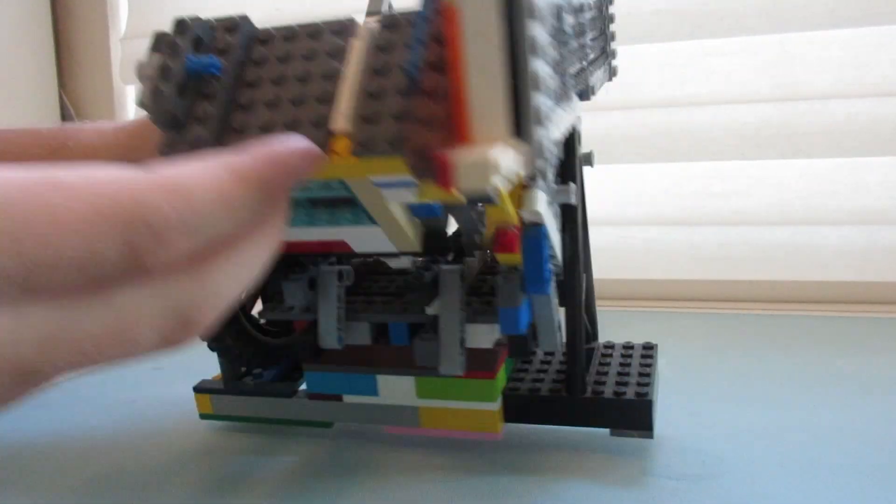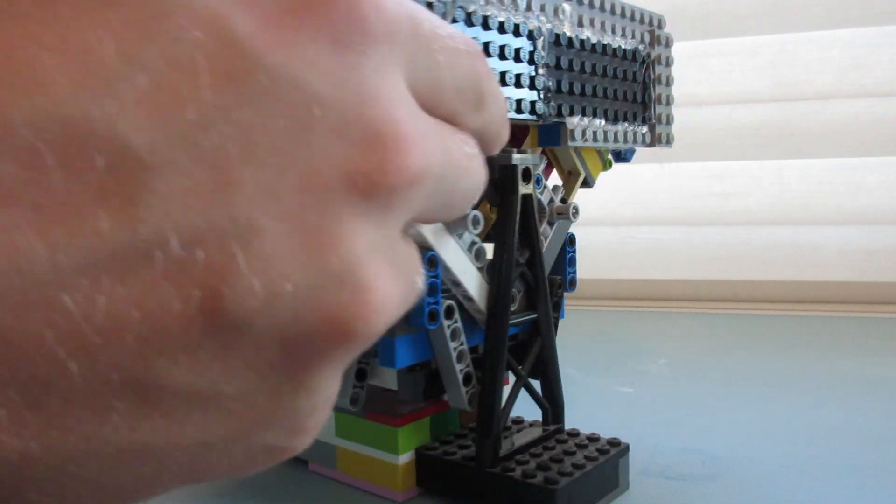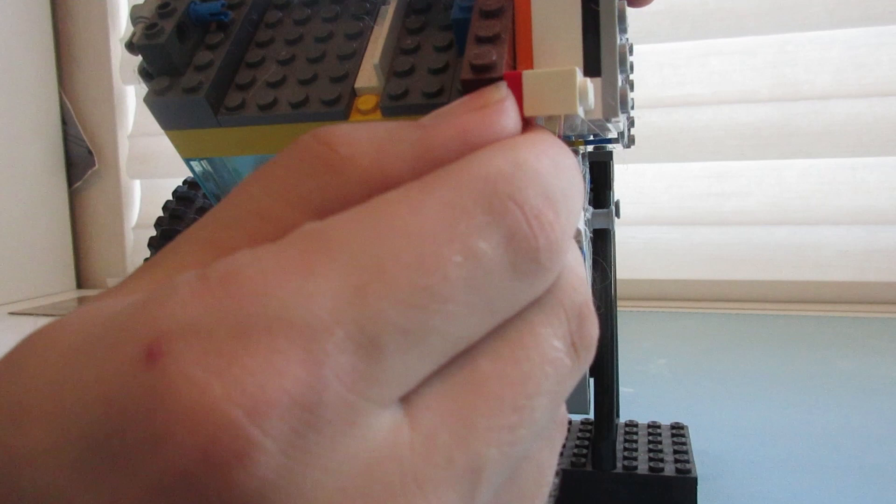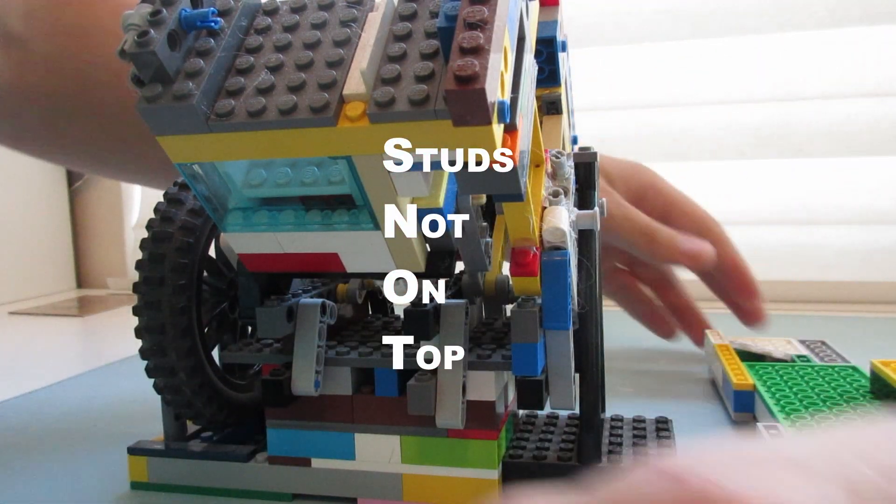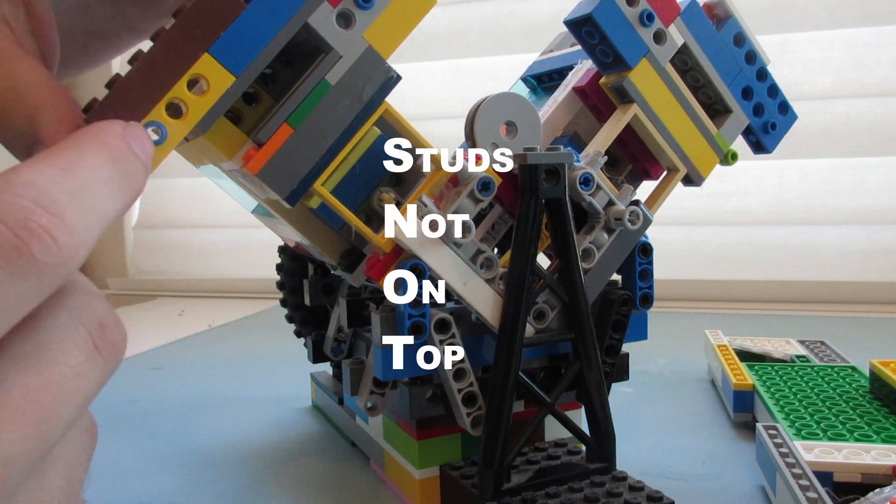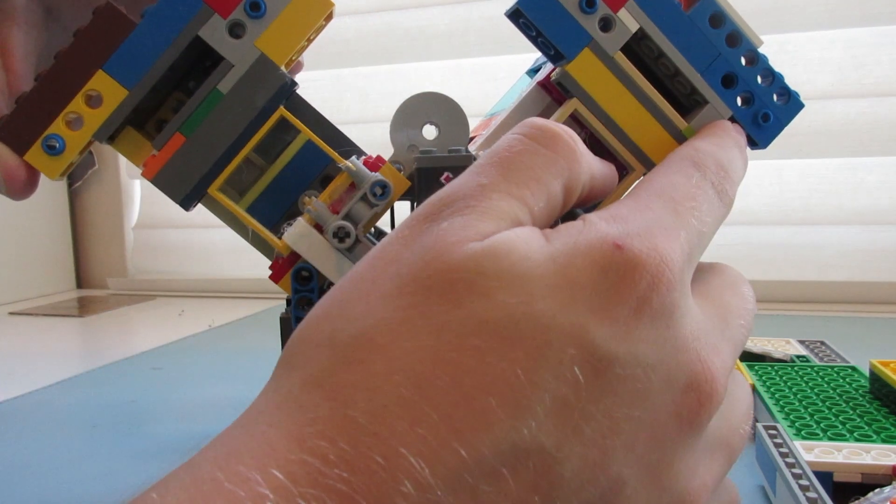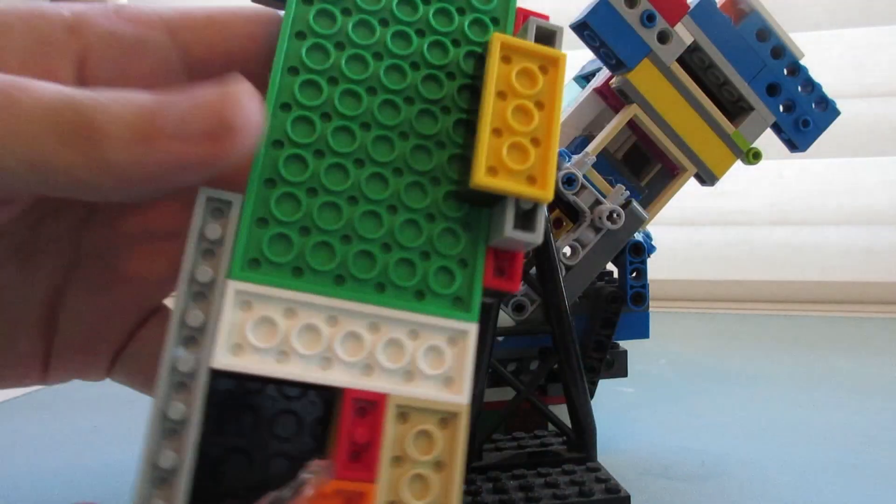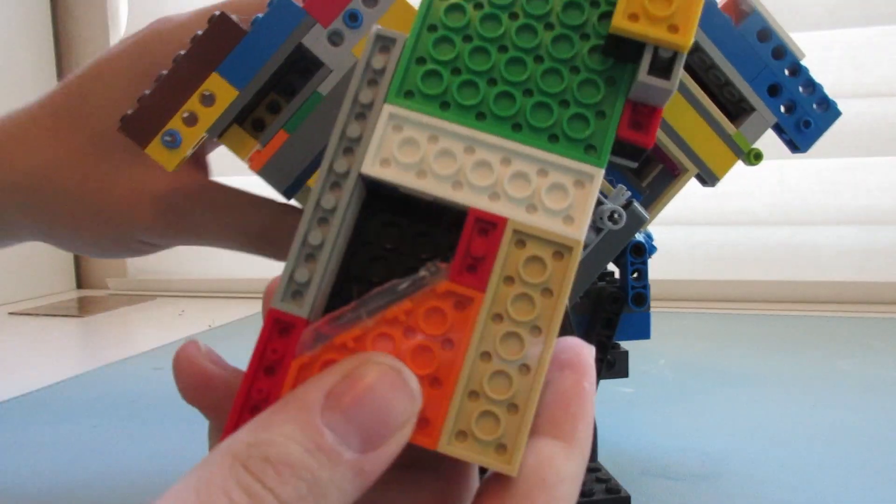It also has a cool feature I like to call the snot manifold. This manifold is connected using snot techniques. If you don't know what that is, that means studs not on top. The way I accomplished this is by putting these little Technic bricks here and then I put little pins in them, and those pins have little studs, and those studs can connect to the backside of the manifold. And so what I did is I built the manifold.